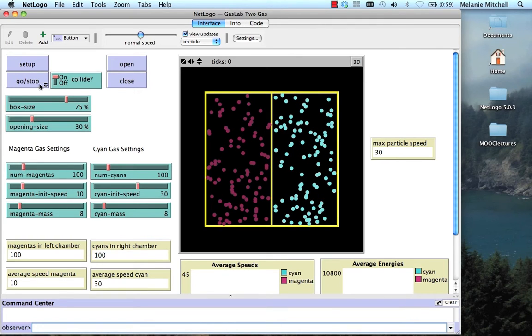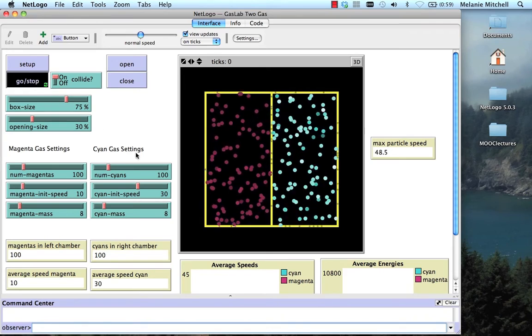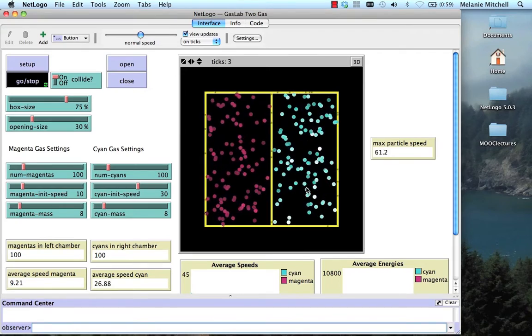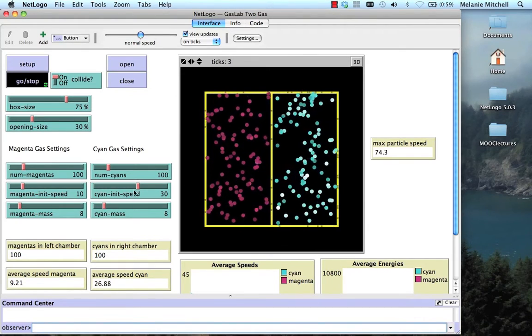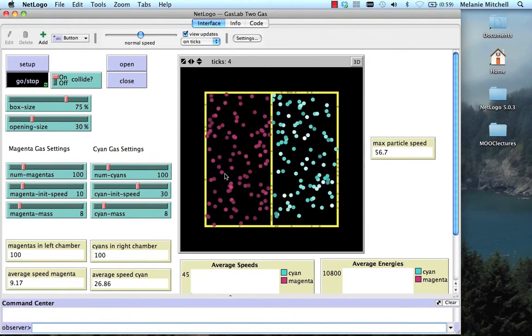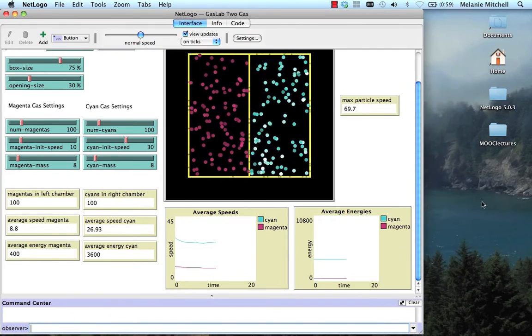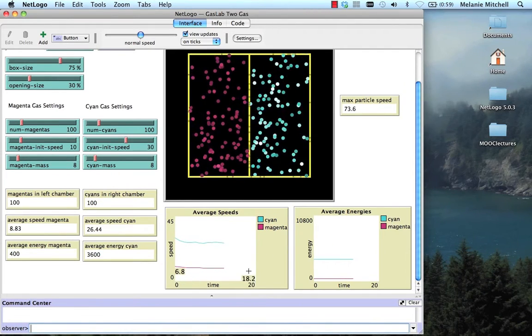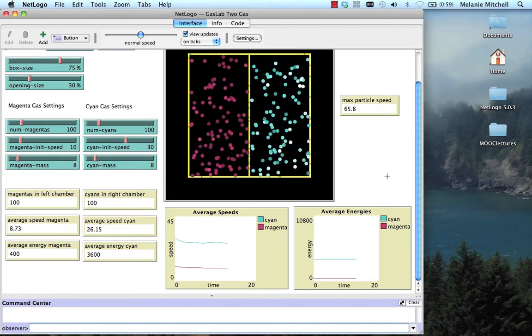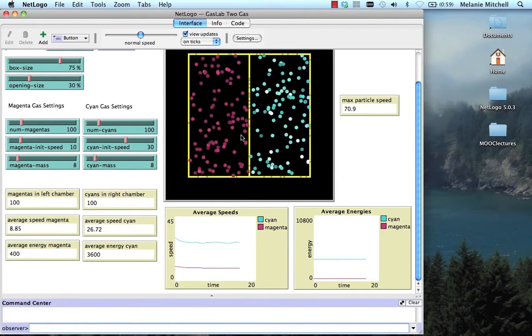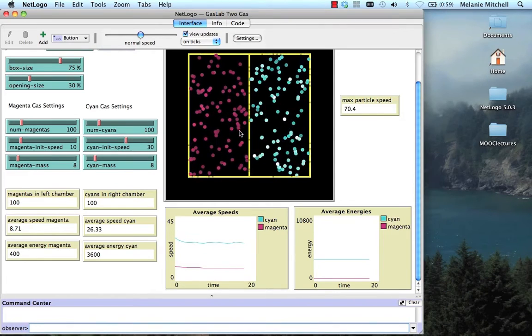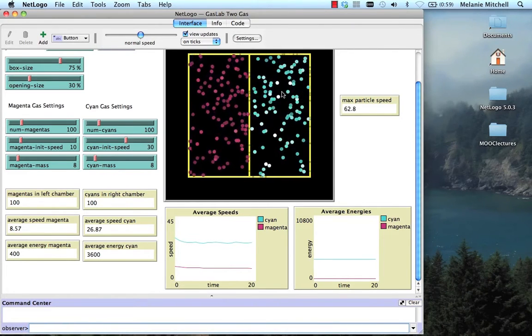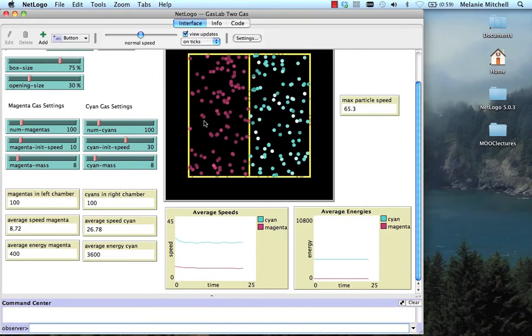And now what happens is these molecules start moving. I've set the initial speed of these blue ones to be faster than the initial speed of these red ones or purple ones. If we look at their speeds, you can see that the blue ones have a higher speed, the red ones have a lower speed, and so on. So this is an ordered system because we have all the reddish particles over here and all the bluish particles over here, and they're not mixing.